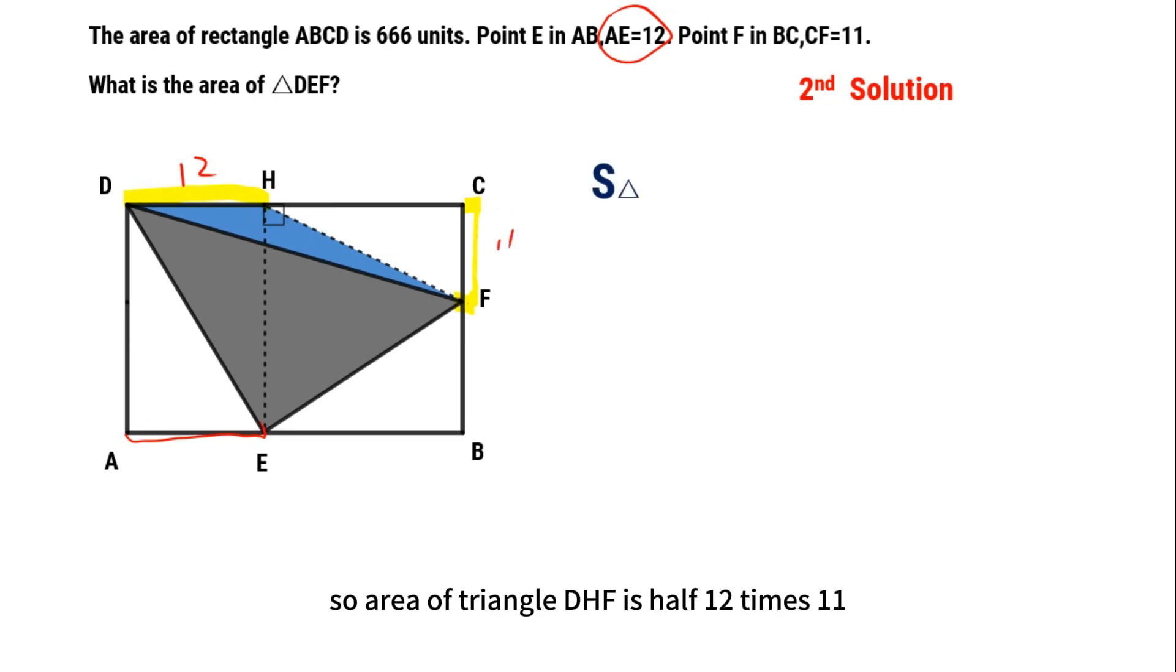So area of triangle DHF is half 12 times 11, is 66.